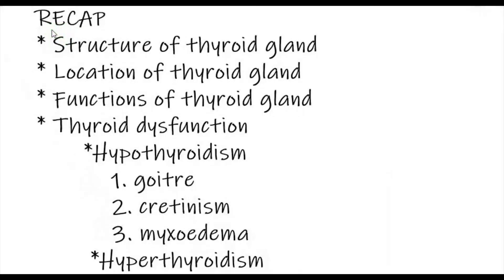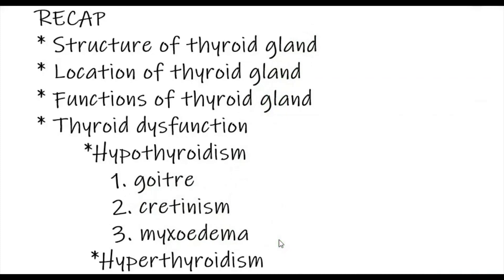Let me give a small recap. Today we discussed the structure and location of the thyroid gland, seven functions of thyroid hormones, and thyroid dysfunction — hypothyroidism (goiter, cretinism, myxedema) and hyperthyroidism (Graves' disease). Today's study portion is the functions of thyroid gland on page 235 — learn any four functions. Thank you.